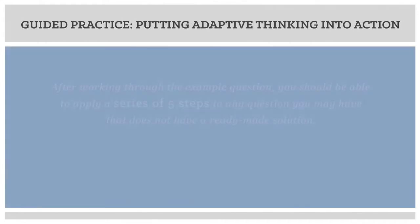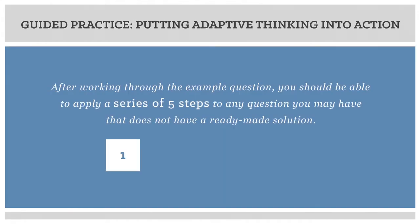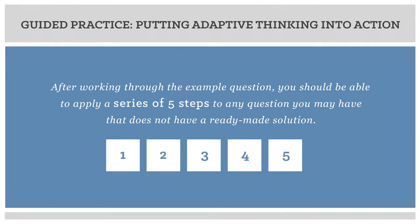The tutorial and planning tool is designed using a guided practice approach. Rather than just providing the tool and instructions, you will be guided through examples where much of the background work has been provided for you. But your team will still have to do the analysis and strategic thinking to arrive at a solution. The goal is to make the planning tool more real-world and contextual. You will practice using adaptive thinking by working through an example question related to health reform, drawn from peer-reviewed literature, national white papers, and expert reviews. After working through the example question, you should be able to apply a series of five steps to any question that does not have a ready-made solution.